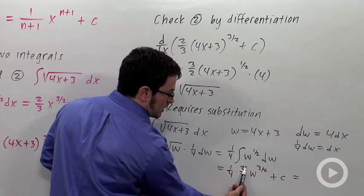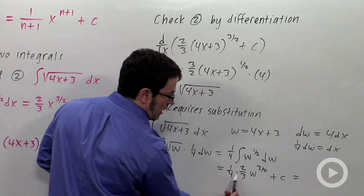This gives me 1 sixth. Right? The twos cancel. I get a 1 half times 1 third. 1 sixth w to the 3 halves plus c.